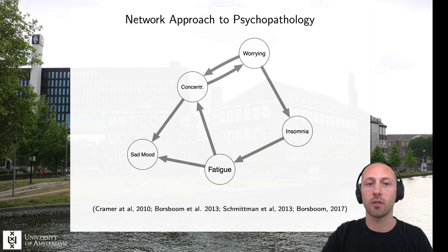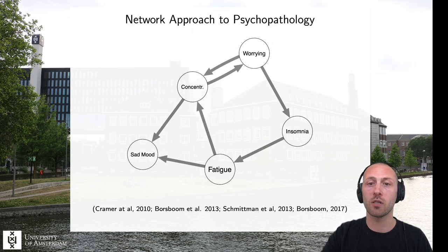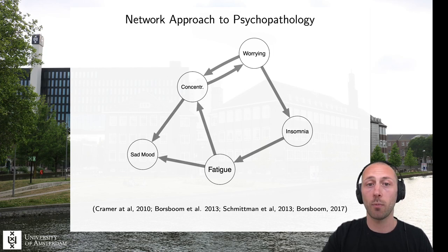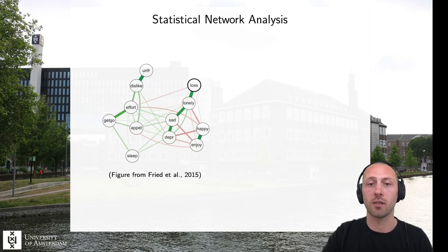As a starting point, I would like to use the network approach to psychopathology, which proposes that symptoms of mental disorders do not necessarily arise due to some underlying common cause, but can also be due to direct causal interactions between symptoms. This idea is illustrated here in a network with a number of depression symptoms. For instance, I might sleep poorly for a couple of nights in a row, which leads me to be fatigued, which in turn diminishes my ability to concentrate, which I may be worrying about, which then in turn might keep me up at night. This idea has been extremely popular and its biggest impact on applied research so far has been that it motivated the use of statistical network models, which capture pairwise statistical relationships between symptoms and also other variables such as risk factors.